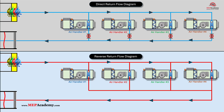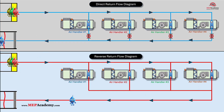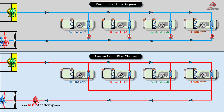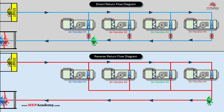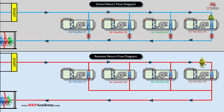In HVAC water-based systems, water distribution is critical to ensure that each terminal unit receives the correct amount of heated or cooled water. Two popular piping configurations — direct return and reverse return — are often used in these systems. Each configuration has its unique benefits, potential drawbacks, and implications for water balancing and system performance.